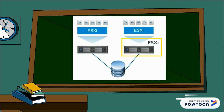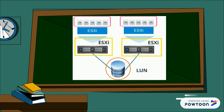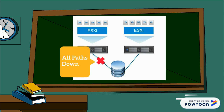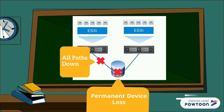If we look at this particular diagram, we have two ESXi hosts connected to a centralized storage device called LUN, and there are a couple of VMs running on each of the ESXi hosts. When there is a communication issue between your ESXi host and the storage device called LUN, an All Path Down event gets triggered. And if your storage device or LUN itself is not accessible, the event which gets triggered is called PDL, or Permanent Device Loss.